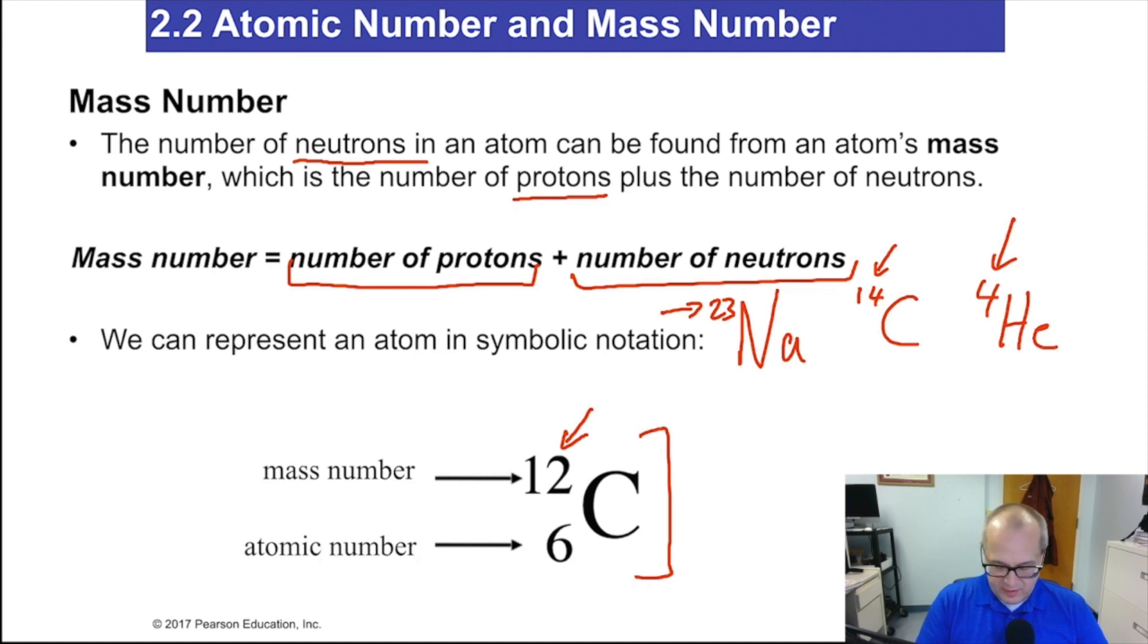Now here, this would be 11. Because these are atomic numbers. Subscripted to the left. They're not always written in. A lot of times they are, a lot of times they're not. If they're not written in, the atomic number, you can always go to the periodic table and get it. Because you know the atomic symbol. So you just look at the periodic table, find carbon, you'll find carbon is 6. Sodium has 11 protons. Sodium is atomic number 11. Carbon is 6. Helium is 2. Atomic number 2. And that's how these symbols work.